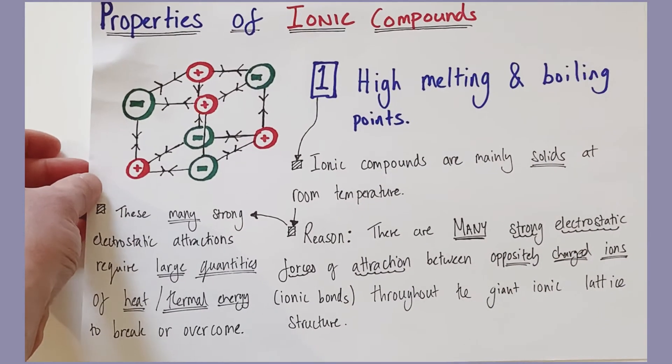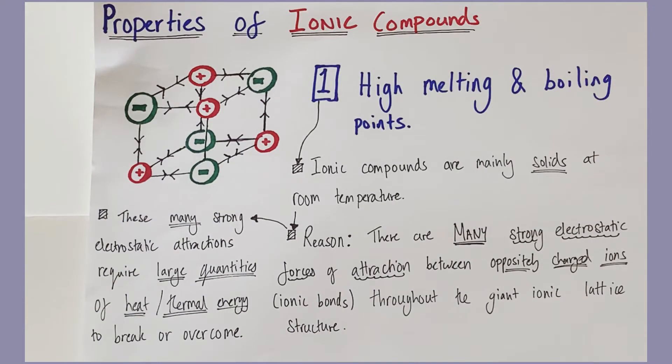Now the first key property I want to focus on is their high melting points. So this small diagram here is a representation of a small area of a much larger lattice structure. Each of these double arrows represents one ionic bond, and you can see very quickly that even in very small sections of a giant ionic lattice, there are a lot of ionic bonds.